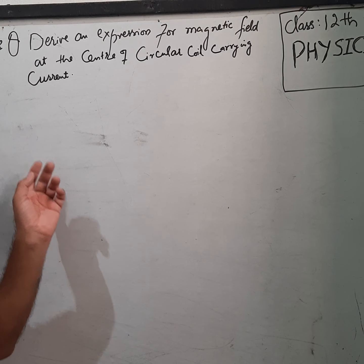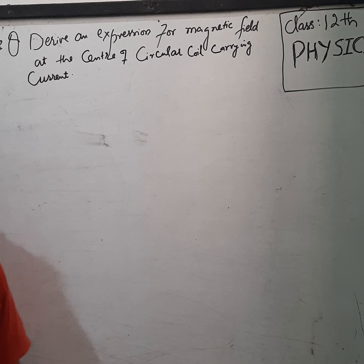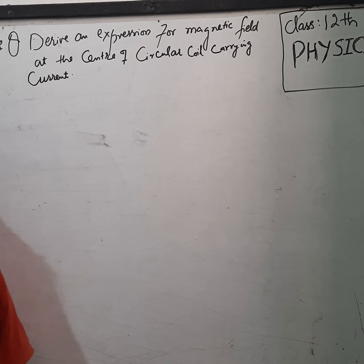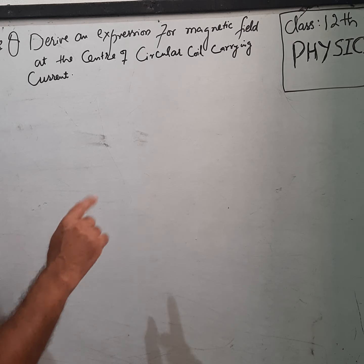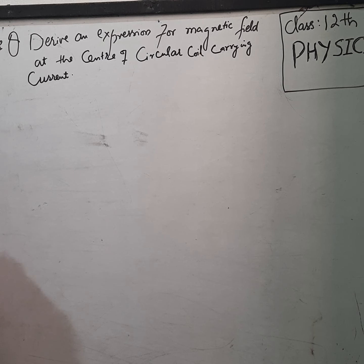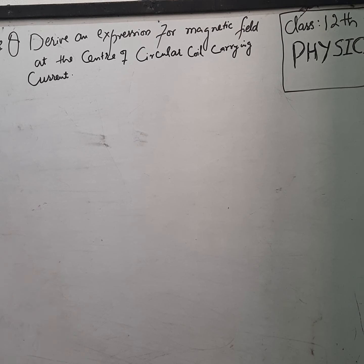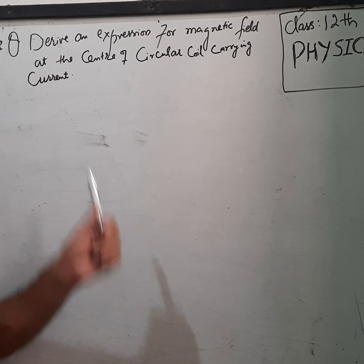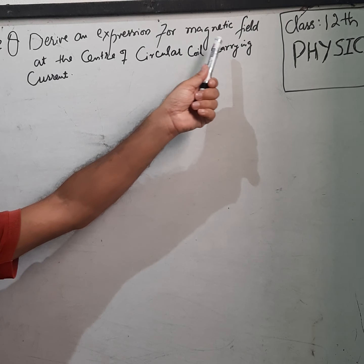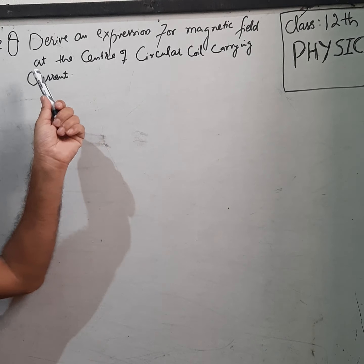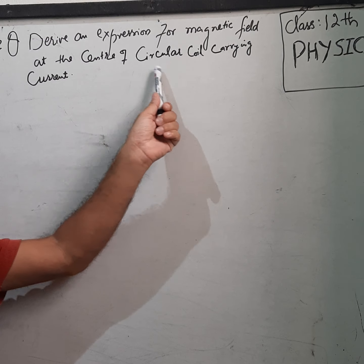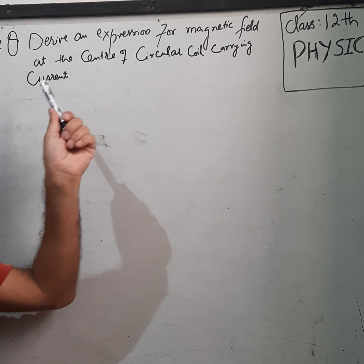Dear students, today we will start the applications of Biot-Savart Law. We have two applications that we need to do. The first application is: derive an expression for the magnetic field at the center of a circular coil carrying current.